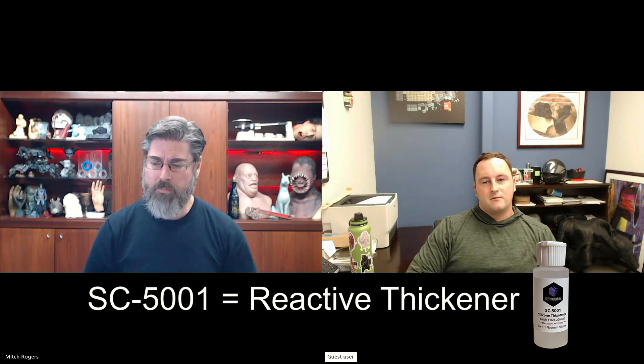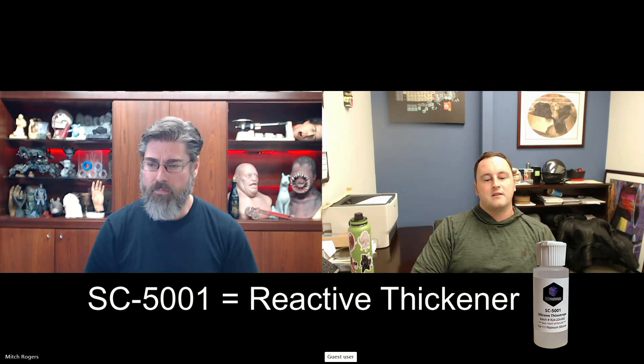That's the important part about reactive materials. Reactive materials are generally designed to go with a specific chemistry, so you will see reactive thickeners for silicones. You would have platinum silicones or tin silicones, which are your most common RTV chemistries. If you added the SC-5001 to something like a tin silicone, it wouldn't have the same desired effects. In some cases you could get some viscosity enhancement, but in many cases you'll probably start to impact your physical properties.